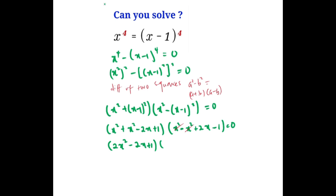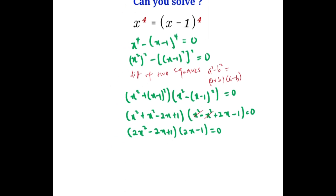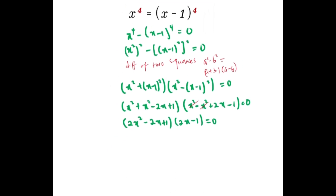So I'm going to have 2x minus 1 equals 0. With this we can have that 2x minus 1 equals 0 as the first condition, and also 2x squared minus 2x plus 1 equals 0 as the second condition.